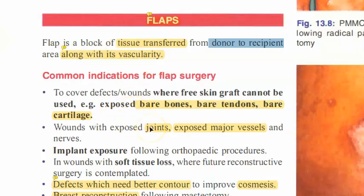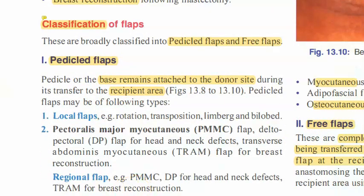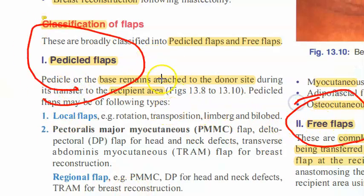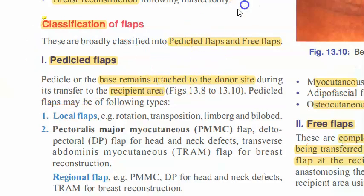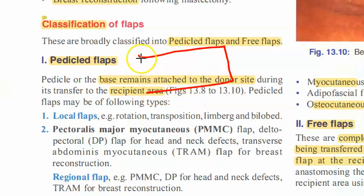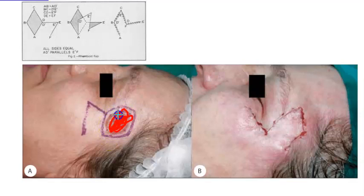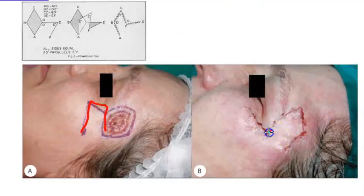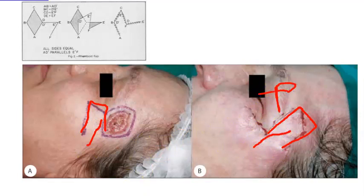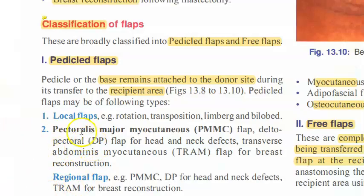There are two types: the pedicled flap and the free flap. The pedicled flap is easy to understand — the flap is raised but has not been cut here, so it is still attached to the donor. You raise it and just turn it to cover the area. It had its own blood supply and it still gets the same blood supply — that is a pedicled flap covering a bare area.